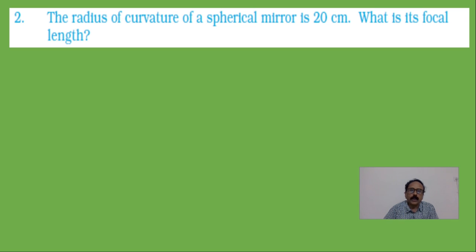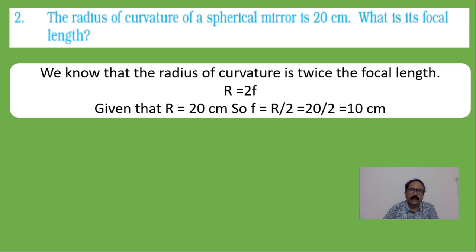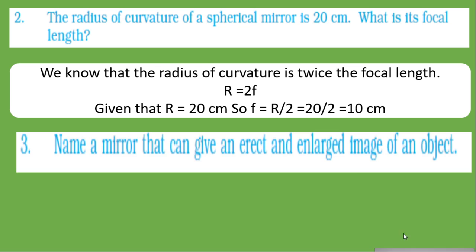Next question: the radius of curvature of a spherical mirror is 20 cm. What is its focal length? We know the relation between radius of curvature and focal length is R = 2F. It is given that R = 20 cm, therefore half of it should be the focal length. So the focal length is 10 cm.